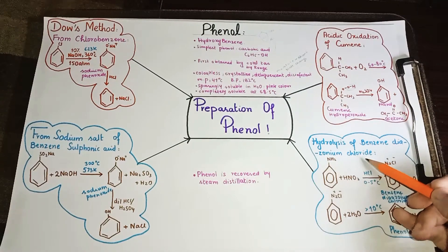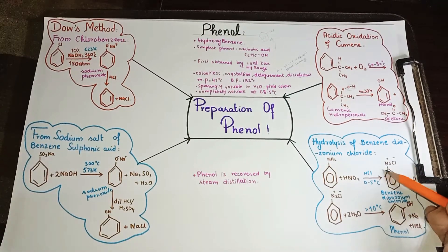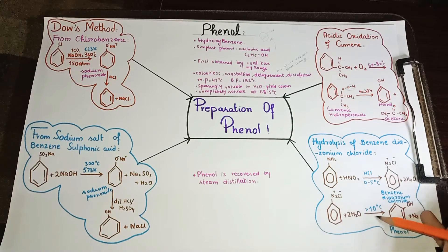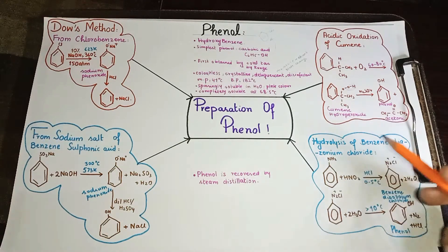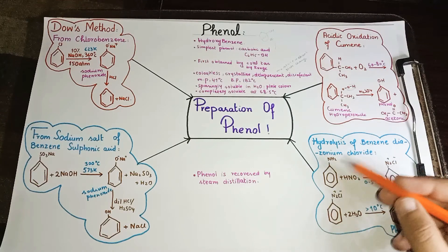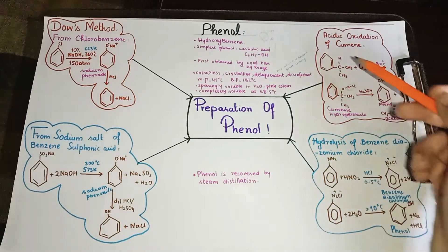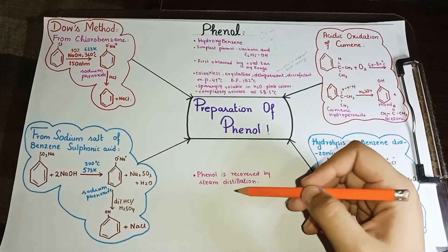Next is hydrolysis of benzene diazonium chloride. Benzene diazonium chloride contains two nitrogen atoms and one chlorine. When it reacts with water at a temperature below 10 degrees Celsius, the diazonium group is replaced by an OH group. Nitrogen gas (N2) is released because nitrogen is not reactive and is more stable as N2 gas. This gives us phenol. Dow's method and the sodium salt method are the most important to know.